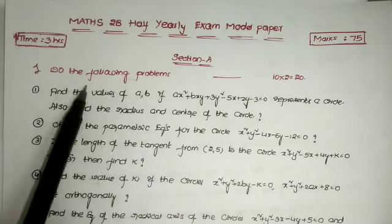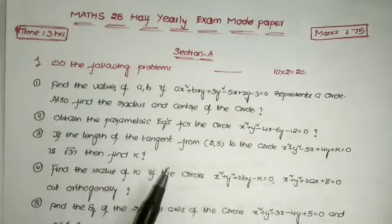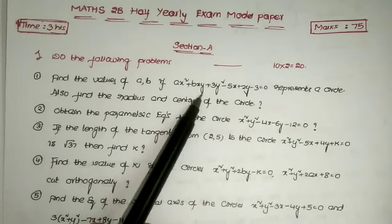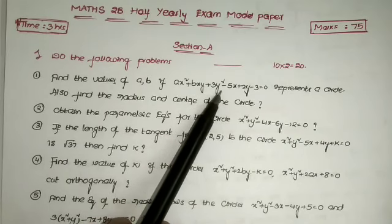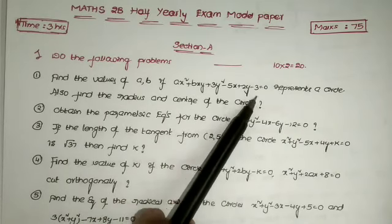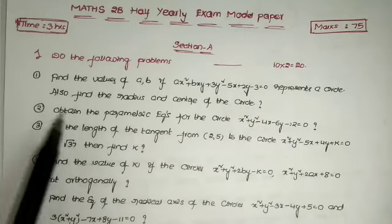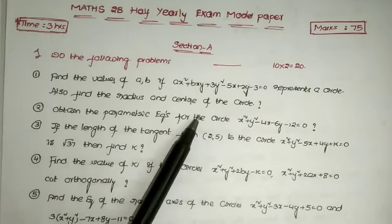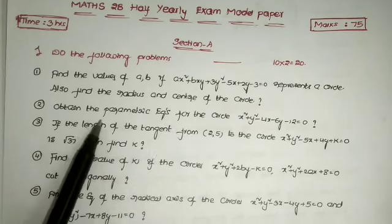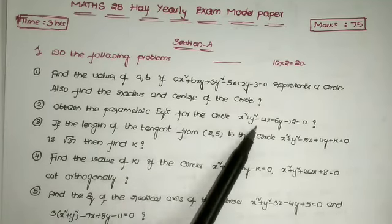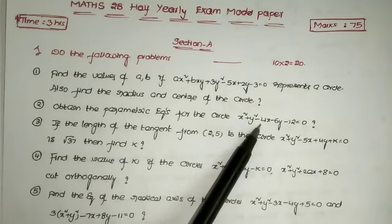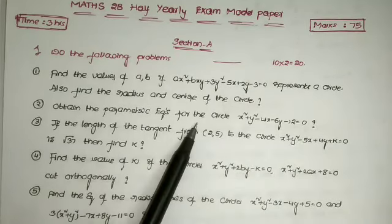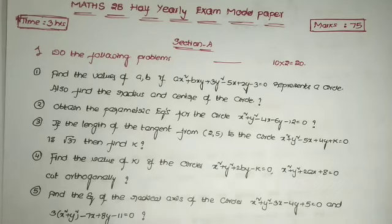First, Section A — these are the two-mark questions. First question: find the values of A and B if Ax² + Bxy + 3y² − 5x + 2y − 3 = 0 represents a circle, and also find the radius and center of the circle. Next, obtain the parametric equations of the circle x² + y² − 4x − 6y − 12 = 0. These are two-mark questions from the topic circles.